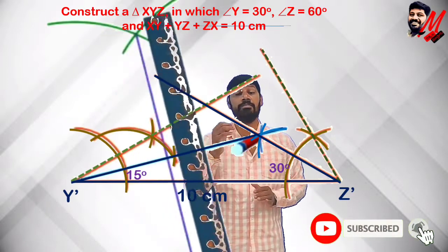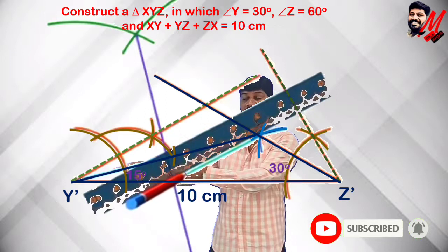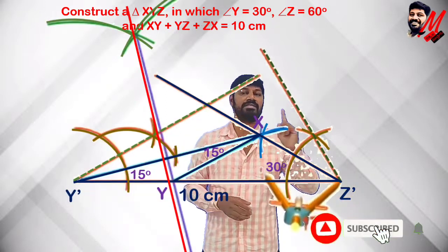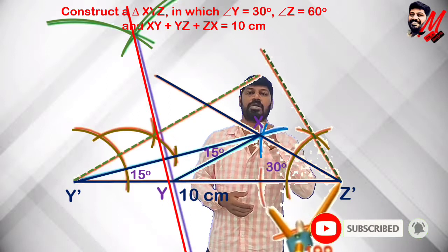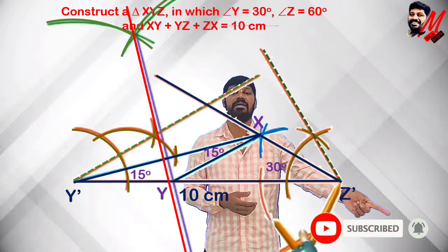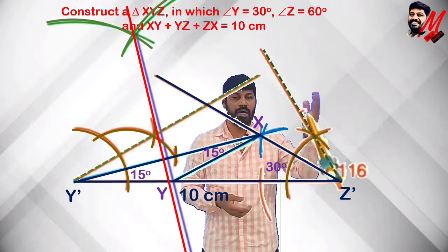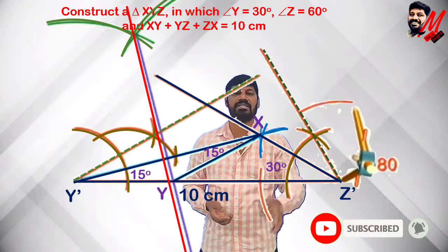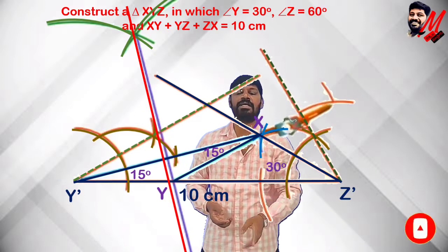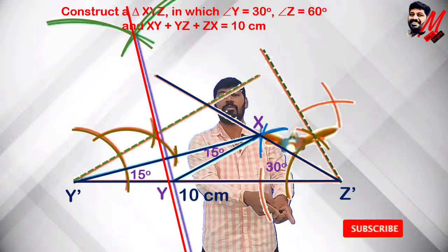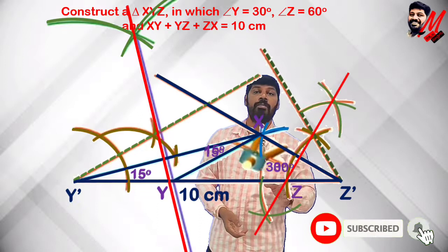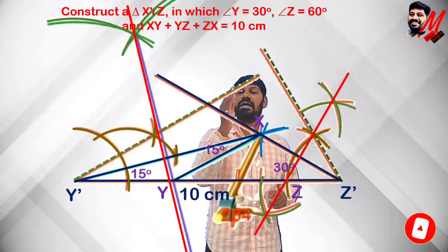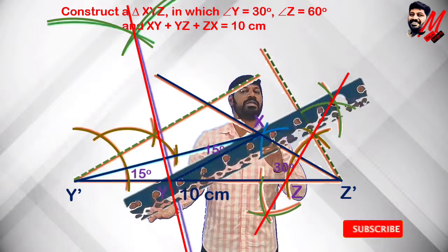That intersection point is Y. Similarly, we draw the perpendicular bisector of XZ'. Place the compass at Z' with more than half radius, draw arcs on both sides, then shift to X with the same radius, cut two intersection points, join and extend them. This perpendicular bisector intersects the base Y'Z' at point Z. So now we have points X, Y, and Z.